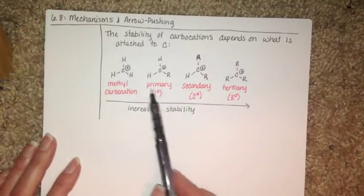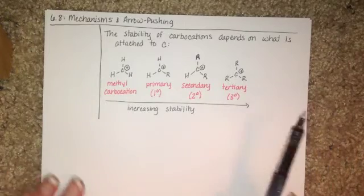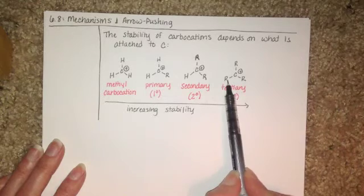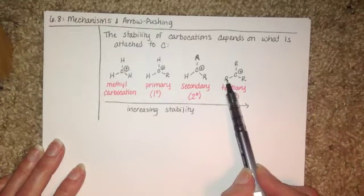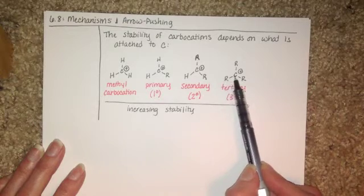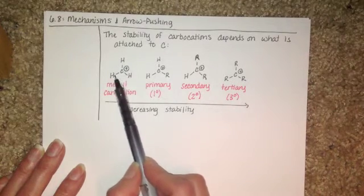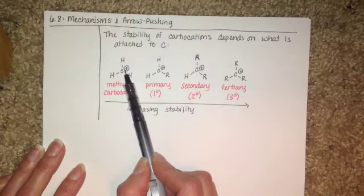We're going to spend more time talking about exactly why this is the trend later on in the year, but right now we'll just gloss over it quickly and say that alkyl groups, these R groups, are electron donating, which means that they are going to dump electron density into the carbon atom. So over here we have no alkyl groups at all. You've got nothing to help stabilize the positive charge on the carbon atom.